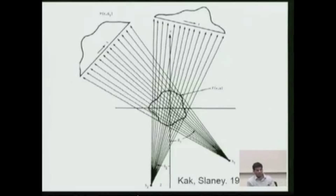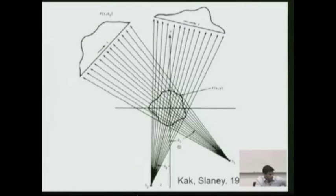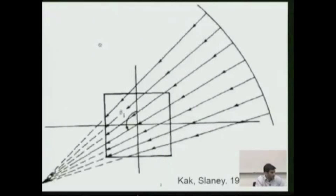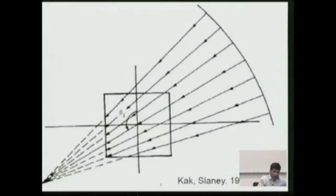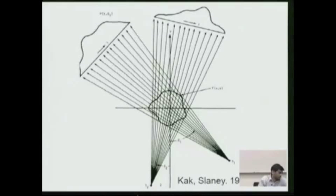Let me remind you of the CT geometry. In the case of Fan Beam, we have a point source and take projections at different angles. Throughout my talk I've used beta for the projection angle, and the object is centered at the origin. In some cases we use a flat detector, and in other cases the detector is curved. With a curved detector, the rays for which you have data are at equal angles. With a flat detector, the rays are at different angles but the data is equally spaced.